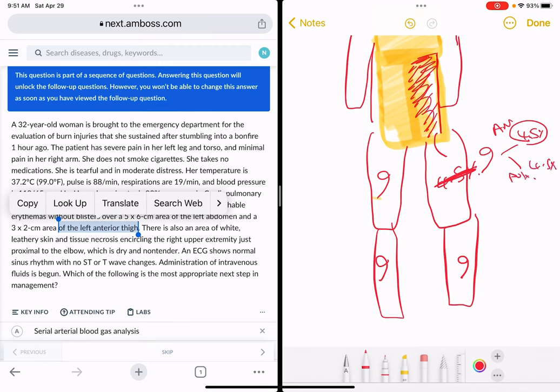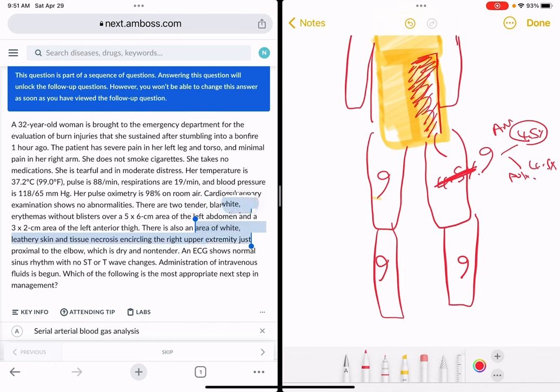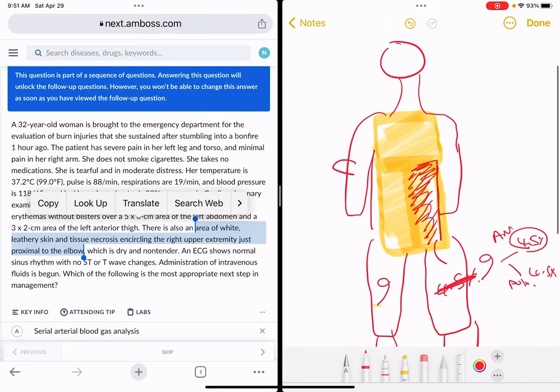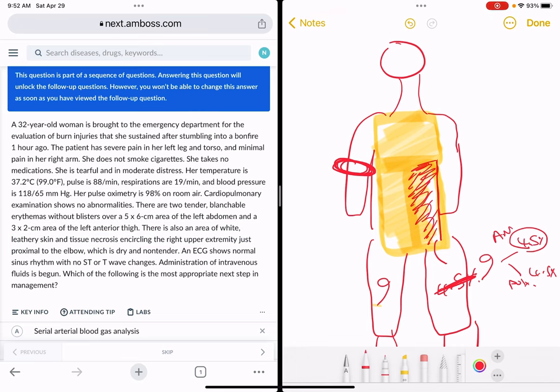There's also an area of white leathery skin which indicates a third-degree burn and tissue necrosis encircling the right upper extremity just proximal to the elbow. Here she has a circumferential third-degree burn. By the way, this is the clue to the answer of this question.